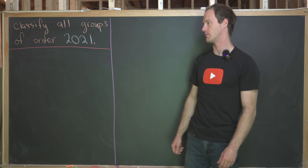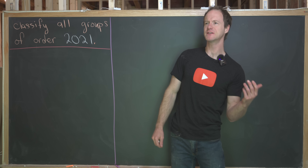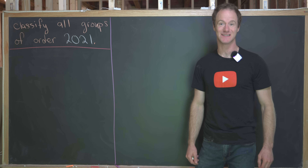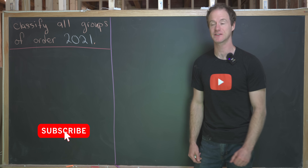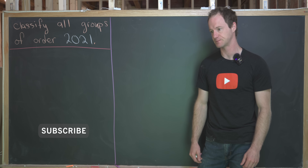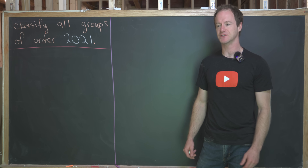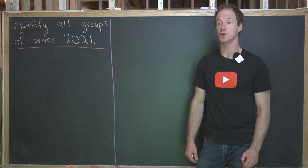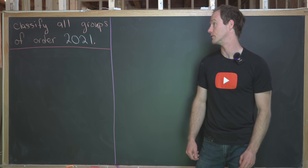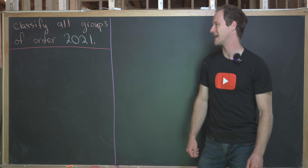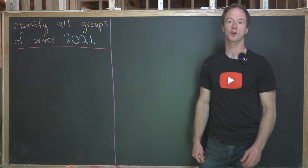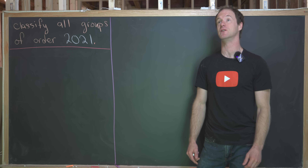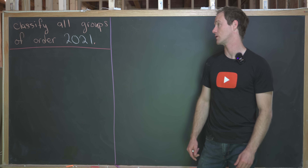We're going to look at a nice group theory problem today. This would be a really good group theory problem for a final exam for a first semester abstract algebra class. Our goal is to classify all groups of order 2021 — that's the year this video is filmed, which is why we're looking at this.